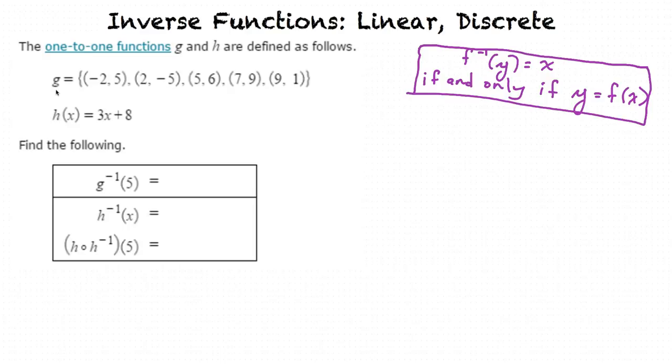All the points are supposed to be flipped. So that would mean that g inverse equals {(5,-2), (-5,2), (6,5), (9,7), (1,9)}. Yes, you are right.